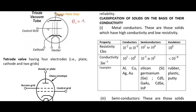We are already familiar with resistivity. To recap: R = ρl/A, where ρ is resistivity, and ρ = RA/l. The unit of resistivity is ohm·meter. For conductors, resistivity is 10⁻² to 10⁻⁸ ohm·meter; for semiconductors, it is 10⁵ to 10⁰ ohm·meter.